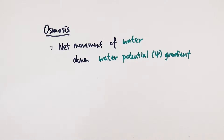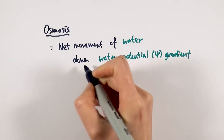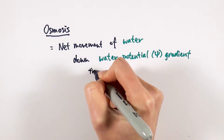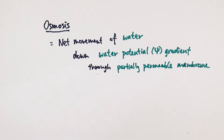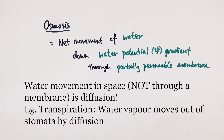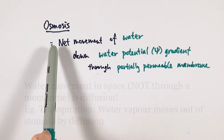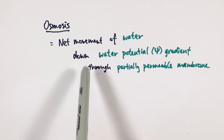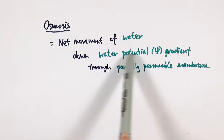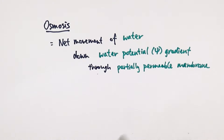The third point you should also include is that it is through the partially permeable membrane. If water is moving but not through a partially permeable membrane — meaning it's just moving across in space — that's not osmosis, that is just diffusion. So there is a very specific requirement in terms of what counts as diffusion and what counts as osmosis. When defining it, remember there are three parts: net movement of water down the water potential gradient through a partially permeable membrane.